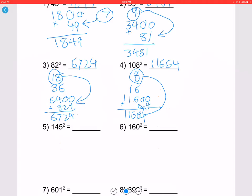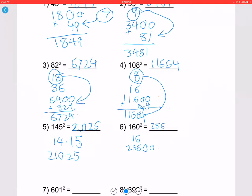Let's try 145 squared — this uses the special technique for numbers ending in 5. Remove the 5 to get 14; compute 14 times 15. You can do 14 times 10 which is 140, plus 14 times 5 which is 70, giving 210. Then add 25 at the end — so 145 squared is 21025. For 160 squared, use the zero rule: remove the zero to get 16, square it to get 256, add two zeros — so 160 squared is 25600.